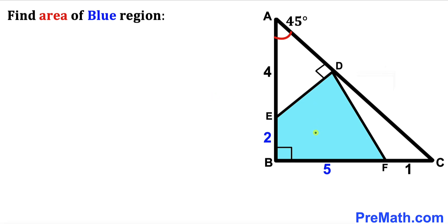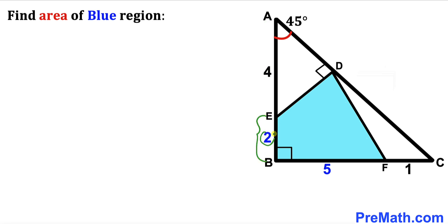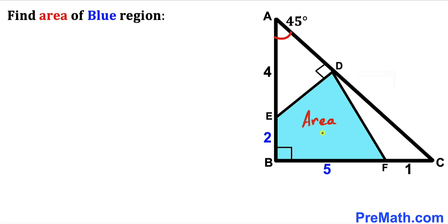Welcome to pre-math. In this video we have a blue shaded quadrilateral BFD fully confined in a right triangle ABC, such that angle BAC is 45 degrees and angle ADE is 90 degrees. Segment AE is 4 units, segment EB is 2 units, segment BF is 5 units, and segment FC is 1 unit. Our task is to calculate the area of this blue shaded region.